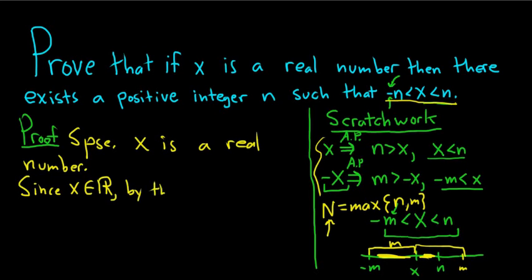By the Archimedean principle there exists a natural number, which I'm going to give a different name. I'm going to call it n1. I want to save n for my final answer. So n sub 1 in the set of natural numbers such that n is bigger than x.